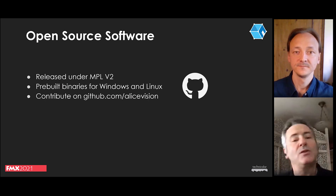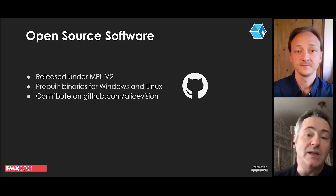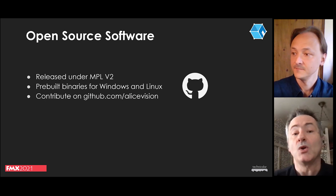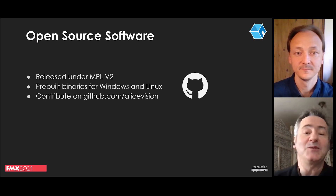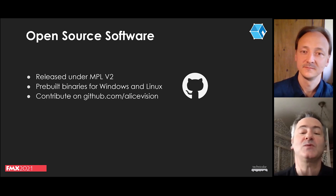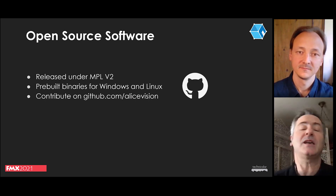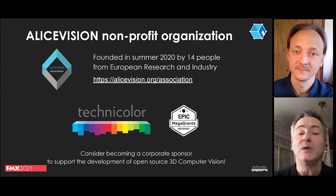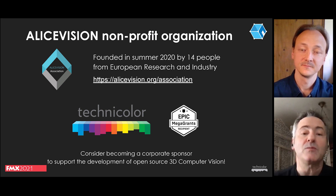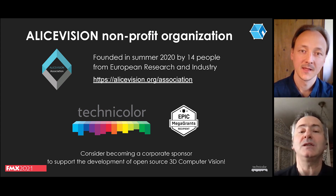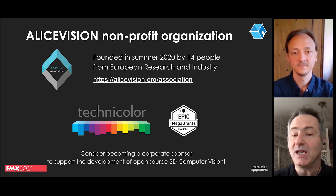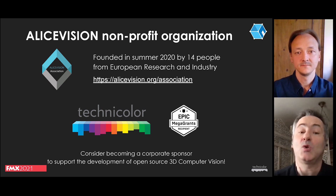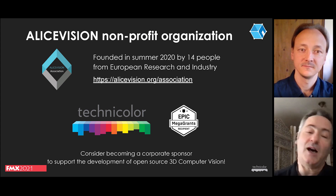Meshroom and AliceVision are available on GitHub, released under the Mozilla Public License MPLv2. You can download pre-built binaries for both Windows and Linux, and contributions are welcome for the software or documentation. The AliceVision team is always willing to share new ideas and start collaborations with researchers, developers, and 3D scanning experts. A year ago, we created a non-profit organization around the founding members of the team, with the goal of setting up an open source ecosystem around photogrammetry techniques. Today we are happy to announce that Epic Games is supporting this initiative with a Mega Grant, making Epic Games the second corporate sponsor after Technicolor Group.